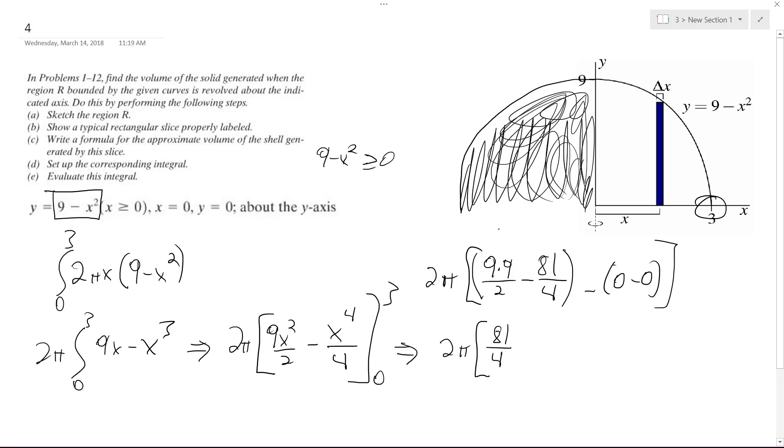Because if you get this, it becomes 162 over 4, and then you get 81 over 4. So this becomes a 2, so we end up with 81 pi over 2 for the volume.